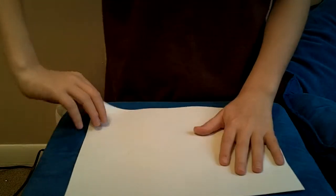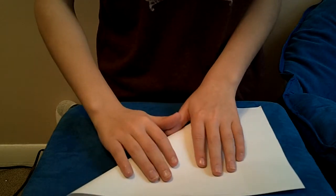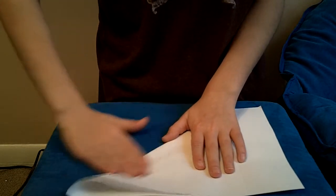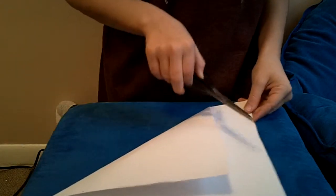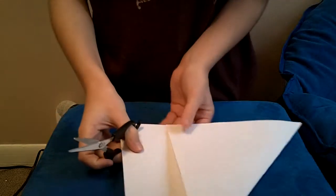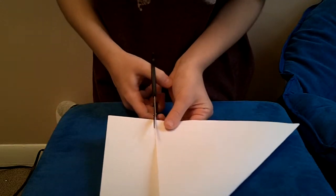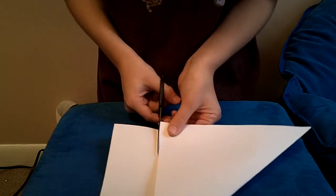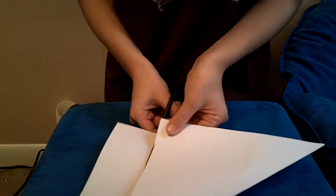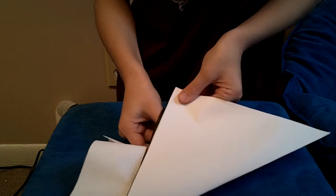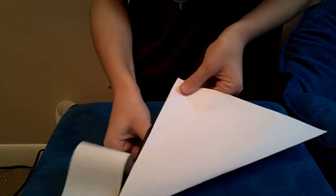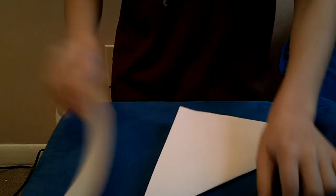First thing you need to do is make this into a triangle like this. Then you need to cut this piece off right here, like this, like that, get rid of that.